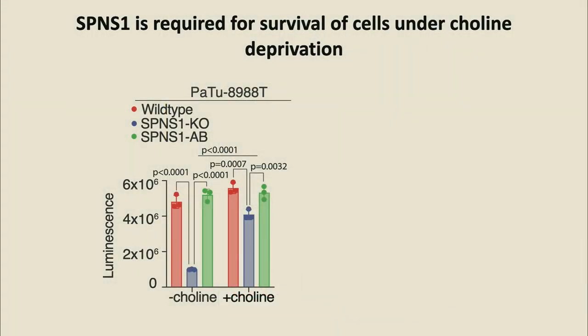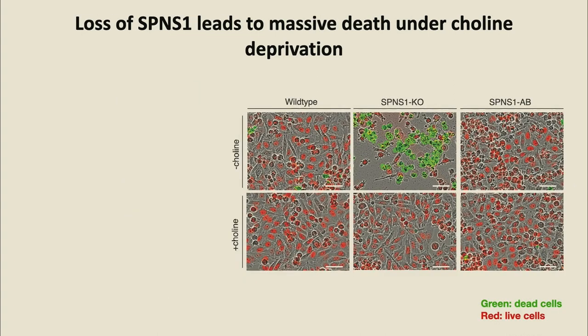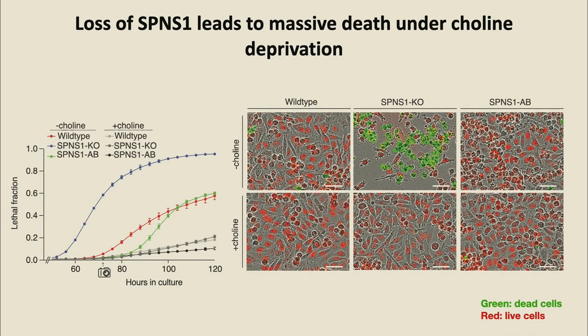We took the hit and validated it. Knocking out Spinster in cells shows that wild-type cells grow normally in minus-choline conditions, almost similar to plus-choline, but knockout cells don't grow and start dying. Adding back the gene rescues the phenotype. This phenotype is reproducible in different cell types and cell lines. Importantly, it's a cell death phenotype — if you remove choline in the absence of Spinster, the cells cannot survive. There is massive death in the plate that you can see and quantify: a lethal fraction in the Spinster knockout under minus-choline conditions.